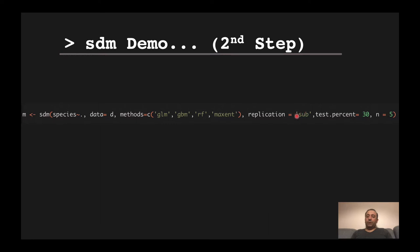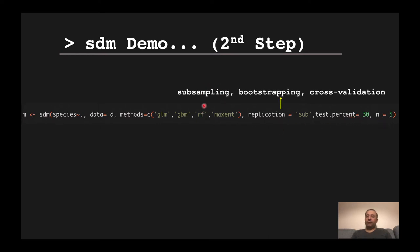We then have arguments specifying the partitioning procedure. For example, the method 'subsampling' uses 30% of the data for the subsampling procedure, and the whole procedure is repeated five times — that is the meaning of the replication argument. Currently three replication methods are available: subsampling, bootstrapping, and cross-validation. You can specify 'sub', 'boot', or 'cv', or use abbreviations or full names.